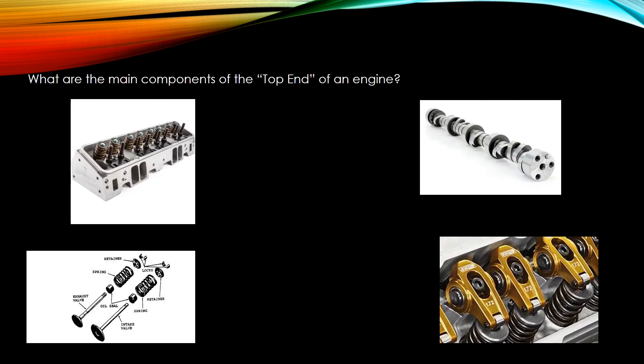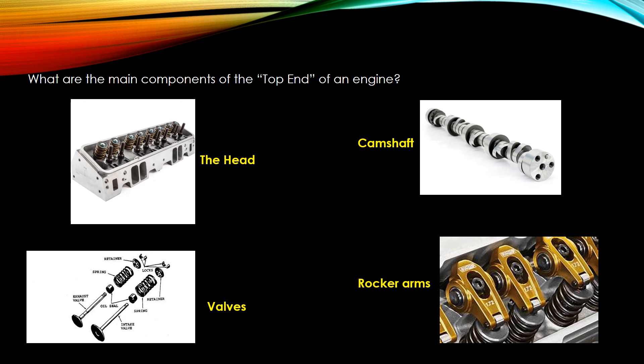For the top end, the four components we focus on are: the cylinder head itself, the camshaft, the valves or valve assemblies, and the rocker arms. In an overhead valve engine, the push rod pushes up through a passage, causing those rockers to rock and open the valves — the same outcome as an overhead cam engine.